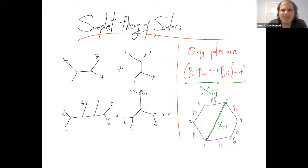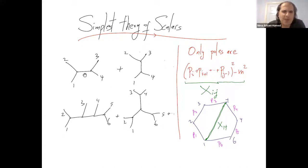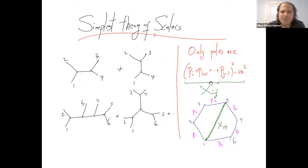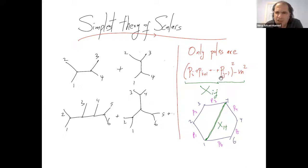A little bit of kinematics: you can see what kind of poles can show up. We care a lot about the singularities and the poles of these amplitudes. For example, in a four-point diagram, the pole can look like p1 plus p2 squared — the same as p3 plus p4 squared — or p2 plus p3 squared, which equals p1 plus p4 squared by conservation of momentum. In general, the only poles are sums of consecutive momenta.